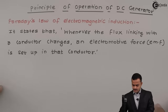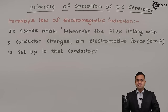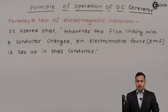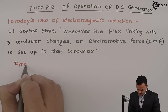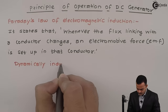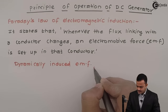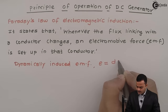Faraday's law of electromagnetic induction states that whenever the flux linking with a conductor changes, an electromotive force — that is EMF — is set up in that conductor. Whenever a change in flux is associated with a conductor, I will get EMF, and that EMF is nothing but dynamically induced EMF. So that I will represent as E equal to dΦ by dt.